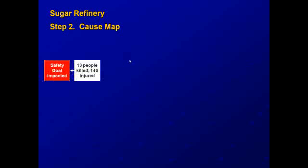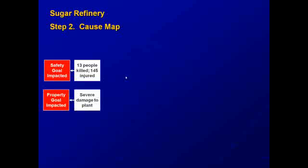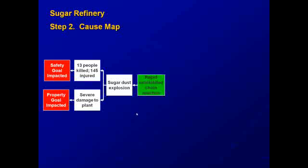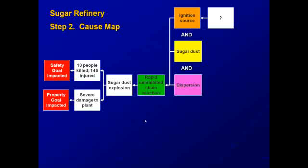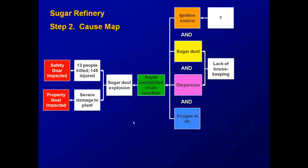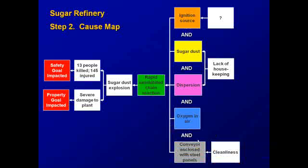The safety goal is impacted because of the people killed and injured. The property goal is impacted because of the severe damage to the plant. Both occurred as a result of the sugar dust explosion, which resulted from a rapid uninhibited chain reaction. That chain reaction was caused by an ignition source, which is unknown; fuel, which was sugar dust; and dispersion of the sugar dust. The presence and dispersion of sugar dust were determined to have been caused by a lack of housekeeping at the site. Oxygen was present in the air, and the conveyor enclosed with steel panels — done for cleanliness of the food product — was the source of confinement.